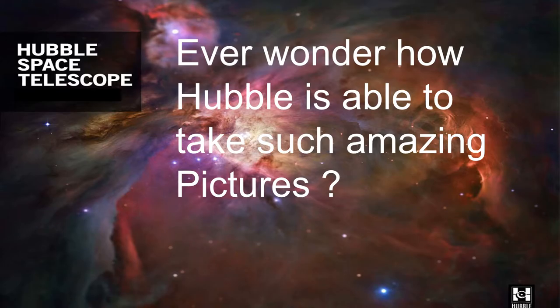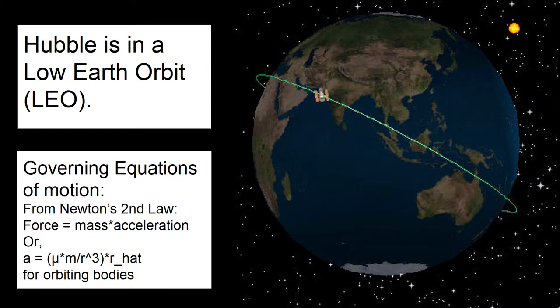Have you ever wondered how Hubble is able to take such amazing pictures? If you think about it, Hubble is in a low Earth orbit around the Earth, and it orbits the Earth about 14 times a day.